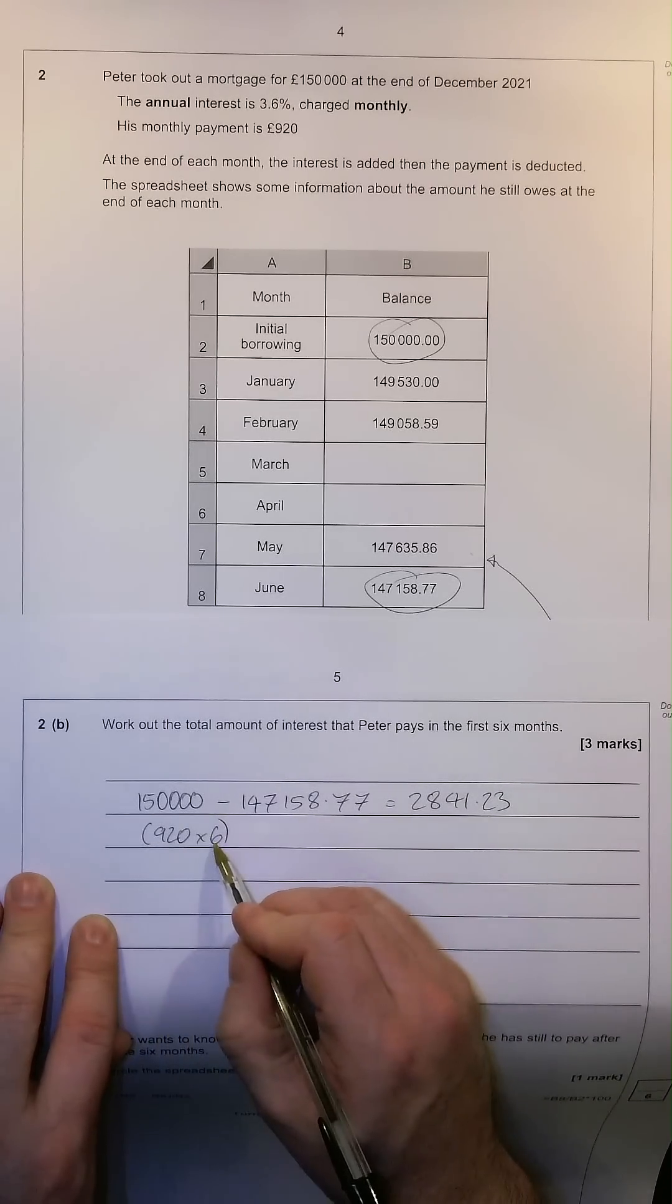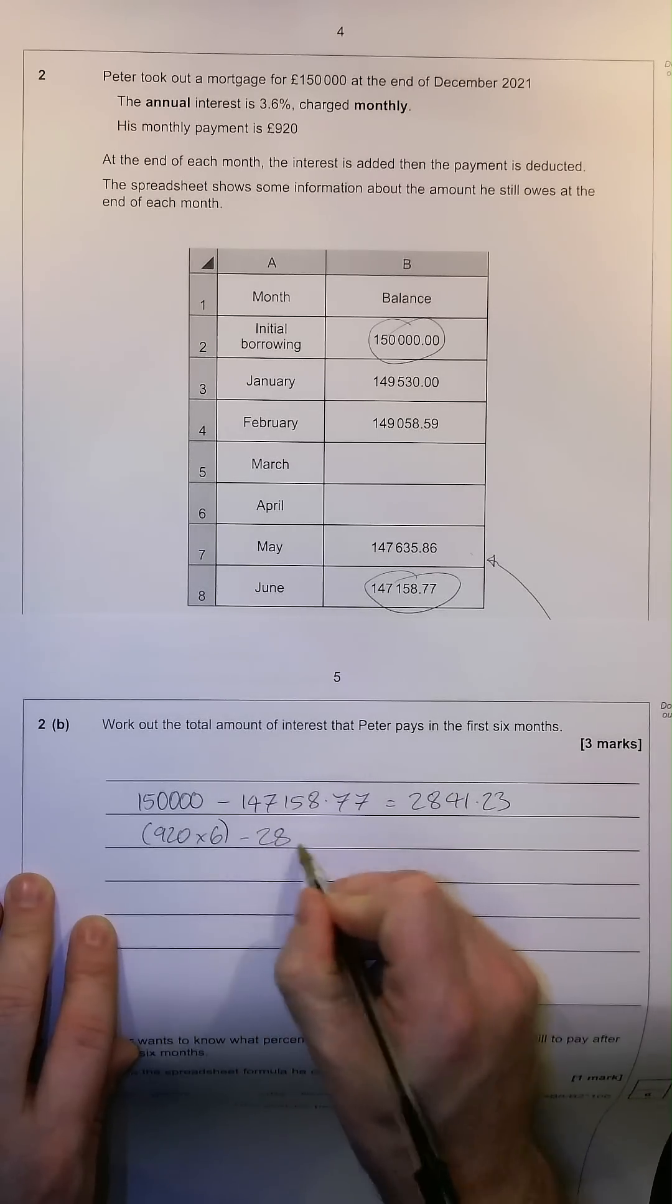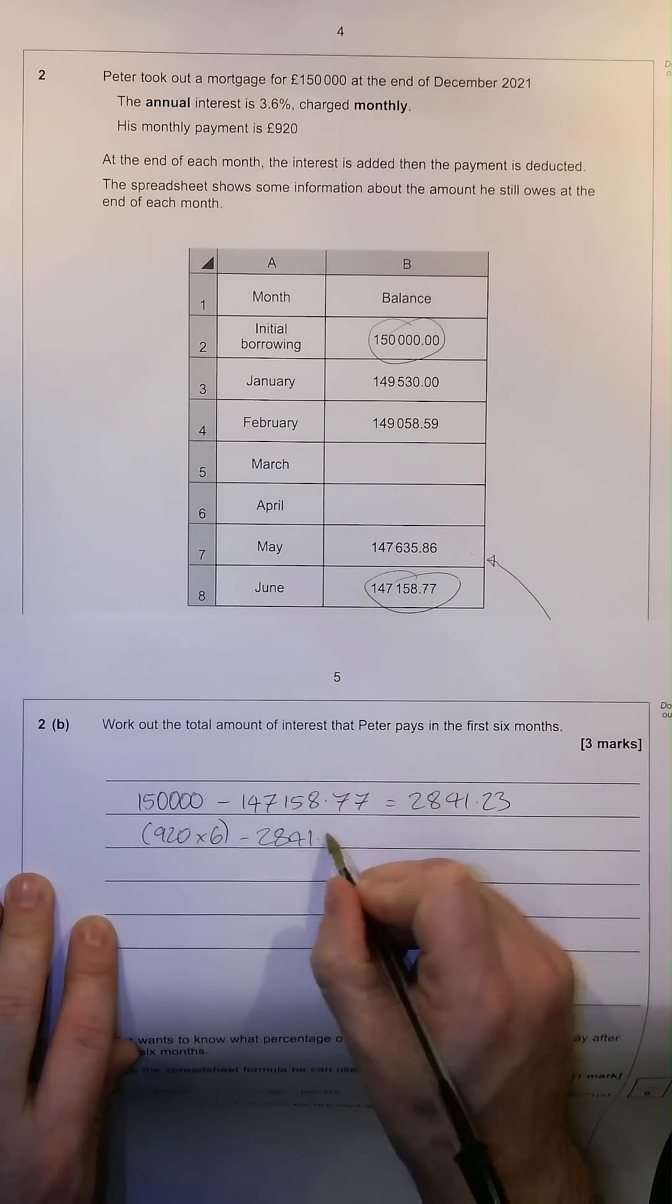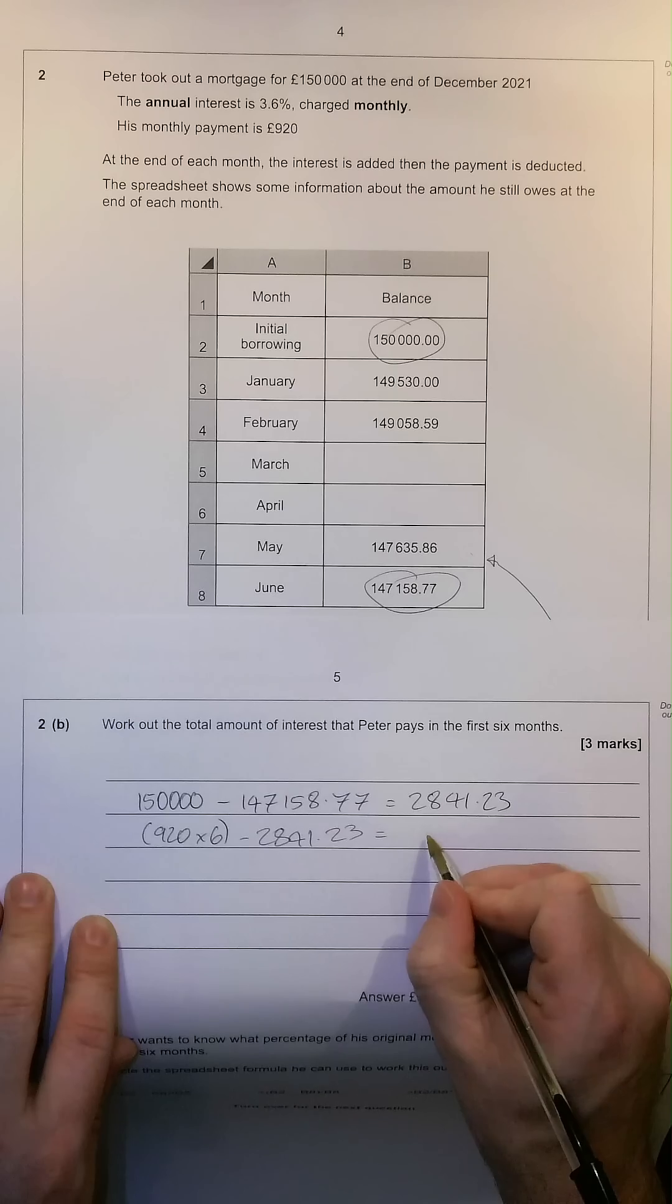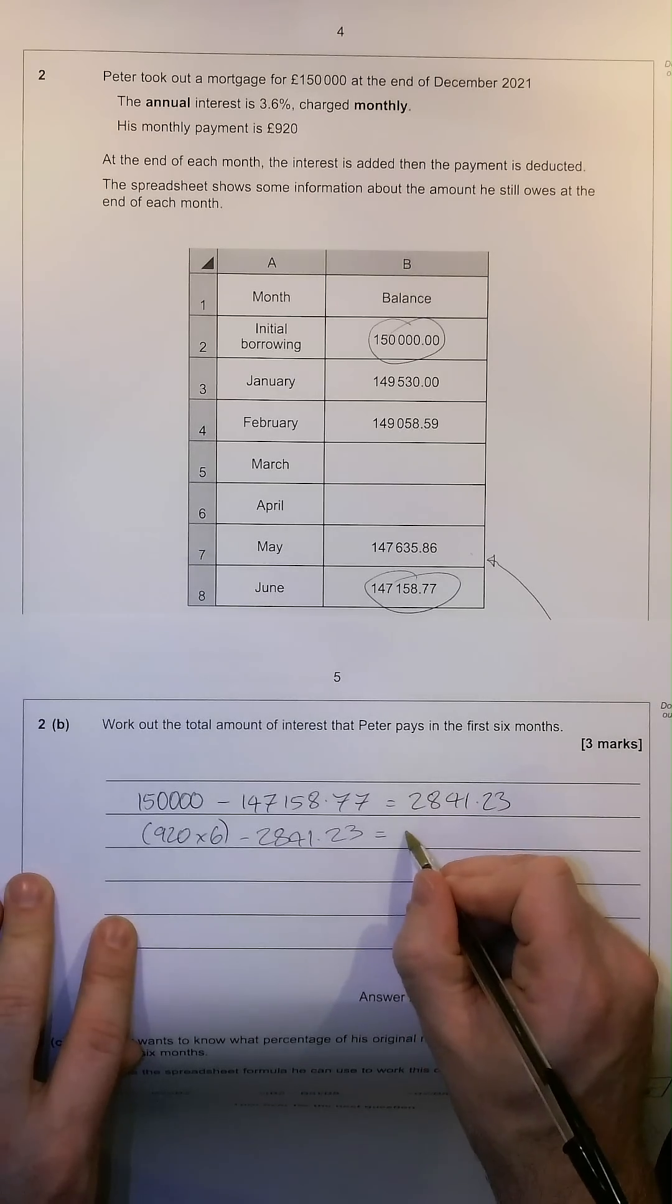So, £920 times six, we can take away the £2,841.23 and that will give us the actual amount of interest that Peter has paid in the first six months of his mortgage.